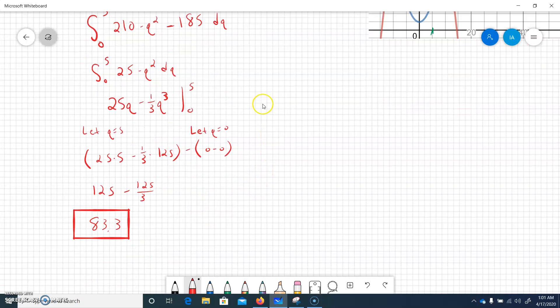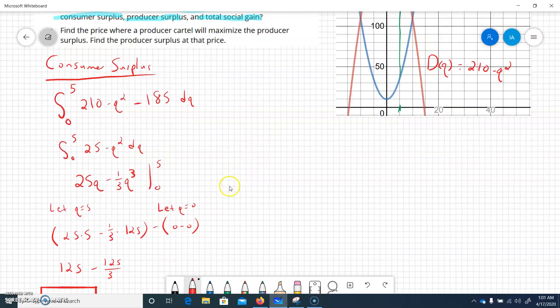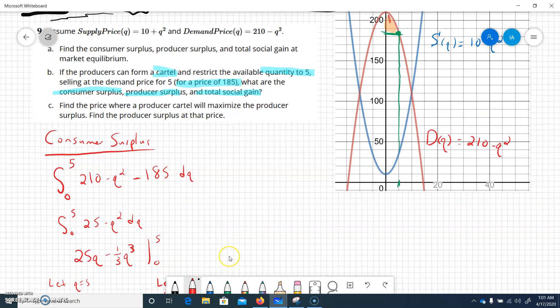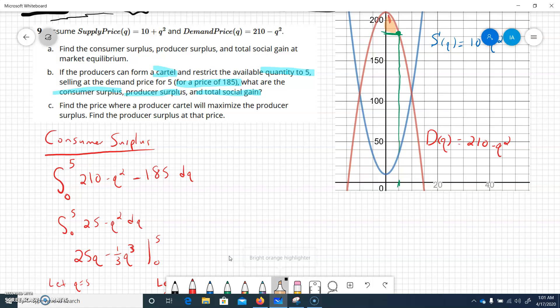So after getting the consumer surplus of 83.3, let's go in and let's look at the producer surplus. The producer surplus works off of the supply, so they're the blue line. We're going right here, so this is what they're charging up here at the green horizontal line.